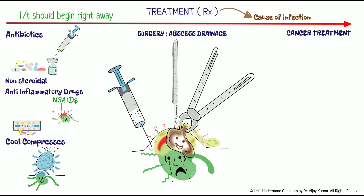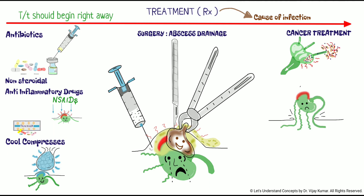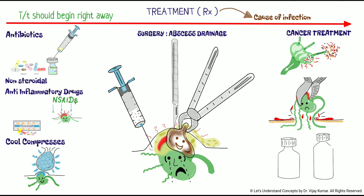Cancer treatment. If your lymph node swelling is due to a cancerous tumor, there are a number of treatment options. These include surgery to remove the tumor, as well as the lymph node, also called lymphadenectomy, chemotherapy, and radiation. Your doctor will discuss each of these options, including their pros and cons, before starting your treatment.